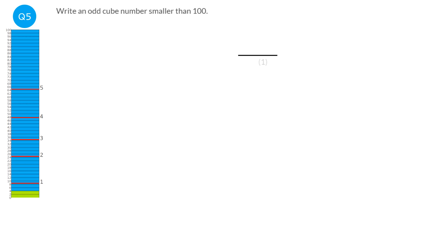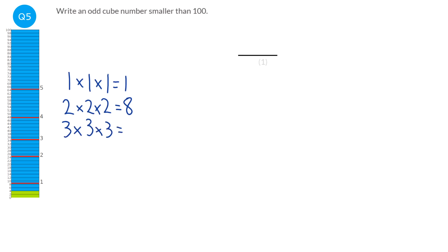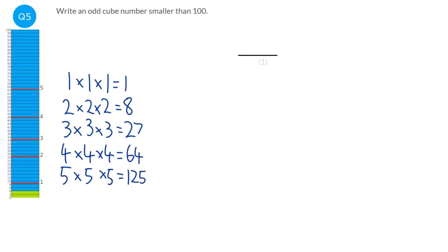A cube number is the answer when you get a whole number and multiply it by itself three times. So one times one times one is one; two times two times two is eight; three times three times three is twenty-seven; four times four times four is sixty-four; five times five times five is one hundred and twenty-five. The question asks for an odd cube number smaller than a hundred. That gets rid of eight and sixty-four (even), and one hundred and twenty-five (too large). So the answer is either one or twenty-seven — I'll go for one.